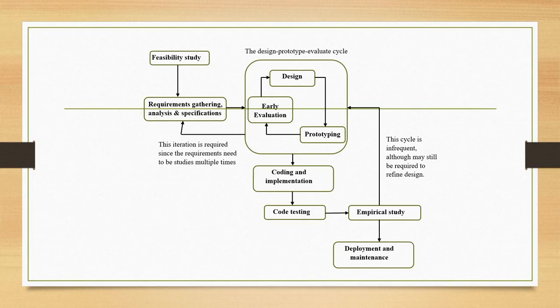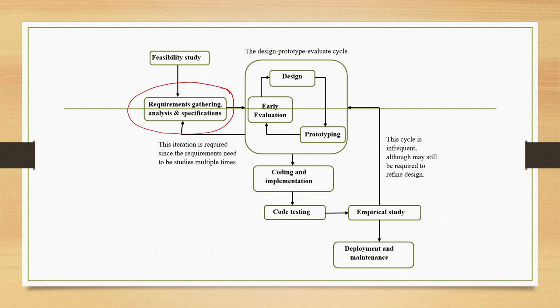We have several stages as shown in this life cycle. For example, we have the requirement gathering, analysis and specification stage. We covered this stage in detail, where we learned about different ways to capture end user requirements, and we went through one particular approach — contextual inquiry. Here, end user means the users who are going to use the system, and the requirements primarily refer to usability requirements.